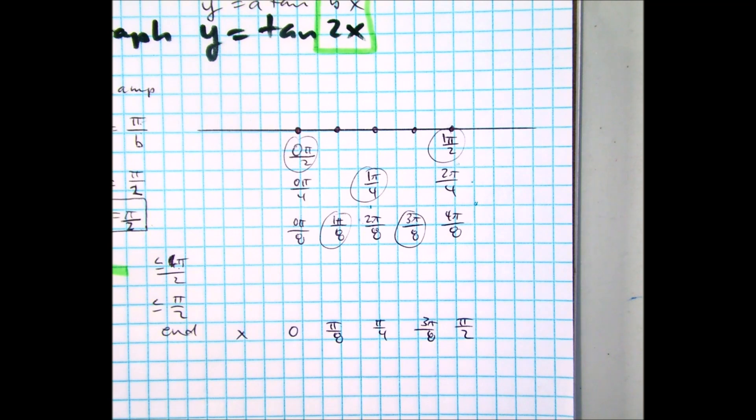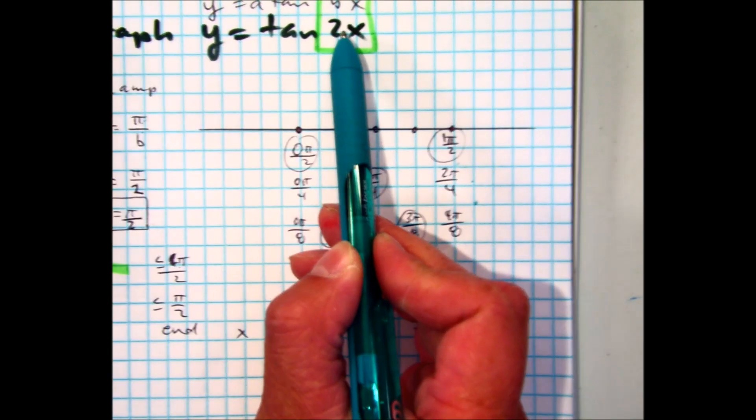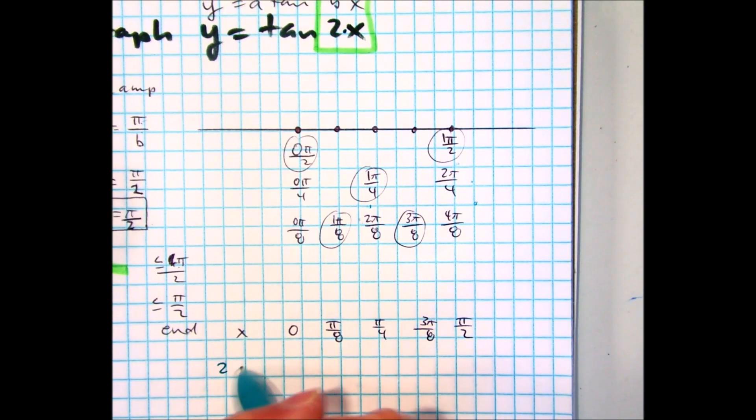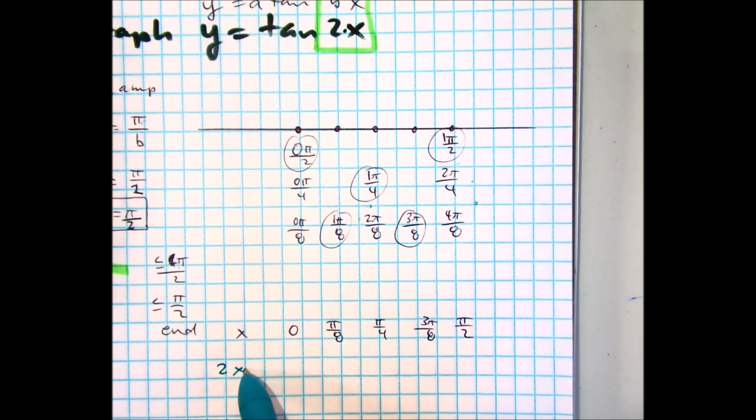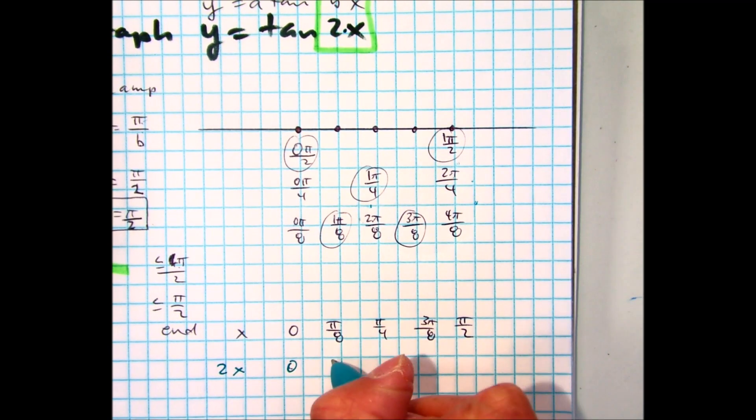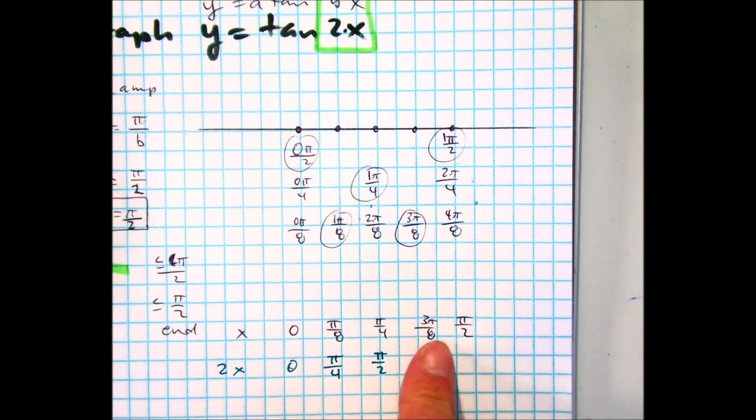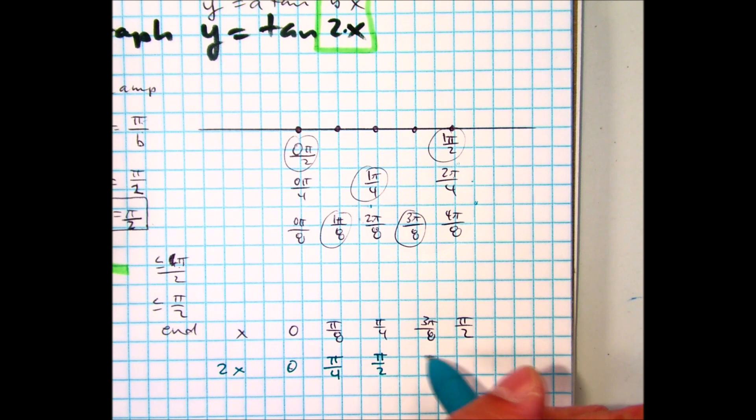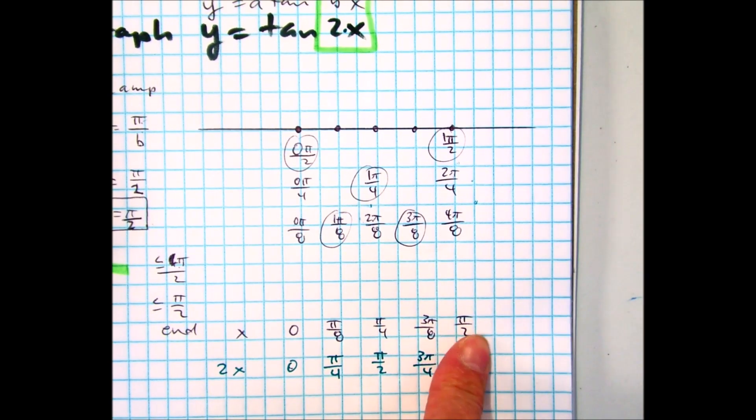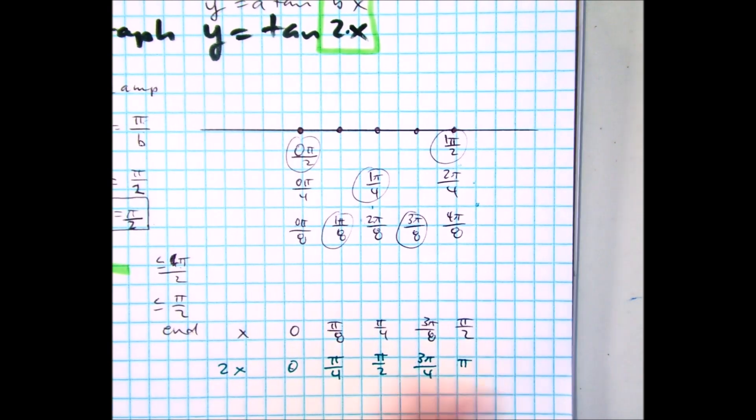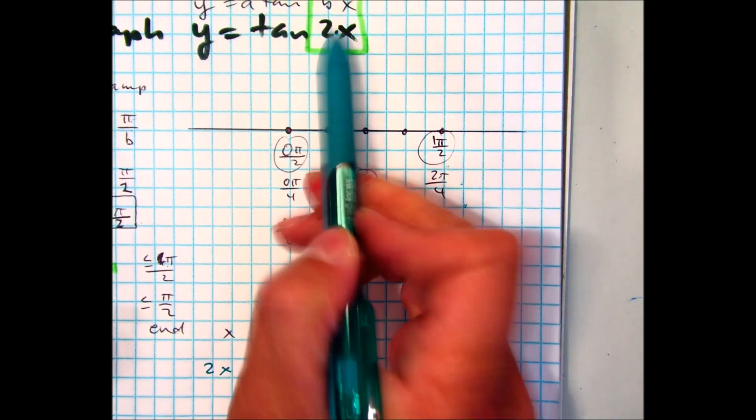Alright, so if you look back above what we're doing here, we have the x values. Class, what's the math operation between 2 and x? So we need to multiply by 2. So I'm taking my x values in this row and I'm just multiplying by 2. 0 times 2 is 0. Pi over 8 times 2 is 2 pi over 8, which is pi over 4. Pi over 4 times 2 is pi over 2. 3 pi over 8 times 2, 6 pi over 8, which is 3 pi over 4. Pi over 2 times 2 is pi. Everyone say the golden row.